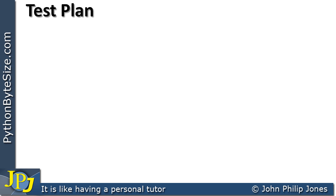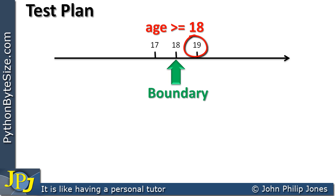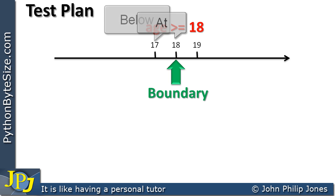We therefore need to devise a test plan against the corrected condition: age greater than or equal to 18, because this is the correct answer. For conditional tests we need to consider what I call boundary conditions. I've drawn a number line with 17, 18, and 19 marked. The boundary for the test 'age >= 18' is 18 itself. As programmers we need to test something less than 18 (i.e., 17), 18 itself, and something bigger than 18 (i.e., 19) — going below, at, and above the boundary.